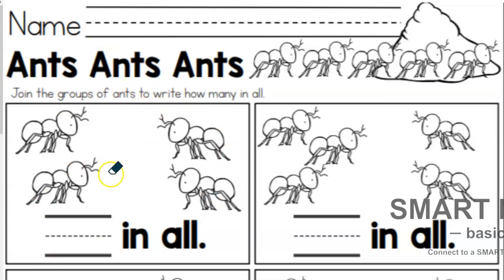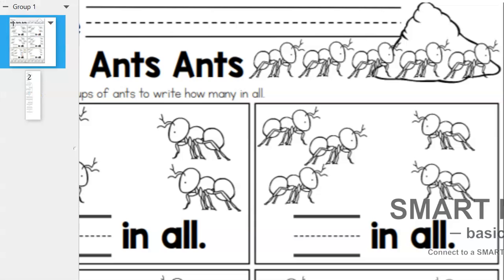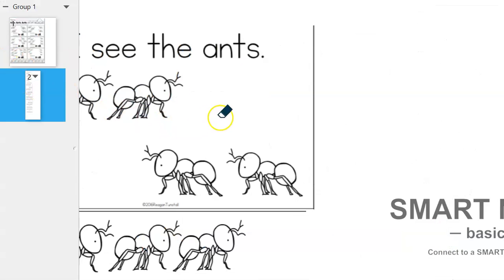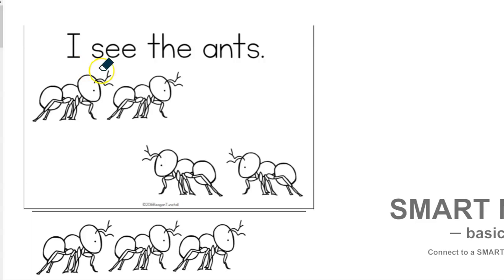Okay, you should have this paper out. It says Ants Ants Ants. This one is going to be your homework. First we're going to look at these. It says I see the ants, and there's one, two, and then one, two. If I count them all together I have one, two, and three, four—four ants all together.